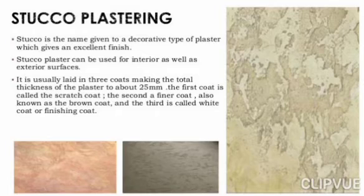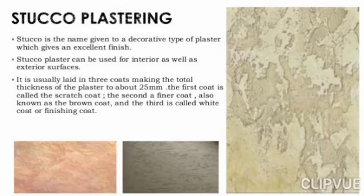Stucco plastering: stucco is a name given to a decorative type of plaster which gives an excellent finish. Stucco plaster can be used for interior as well as exterior surfaces. It is usually laid in three coats, making the total thickness of the plaster about 25 mm. The first coat is called the scratch coat, the second is called the finer coat, also known as the brown coat, and the third is called the white coat or the finishing coat.